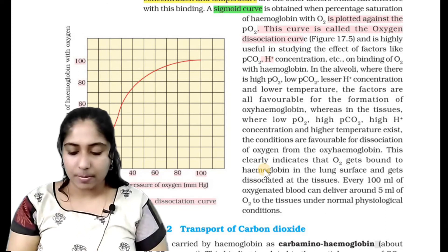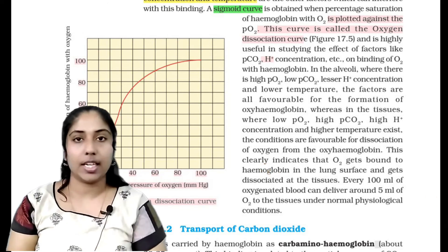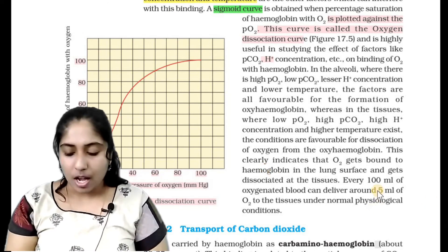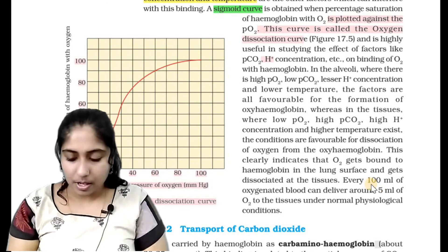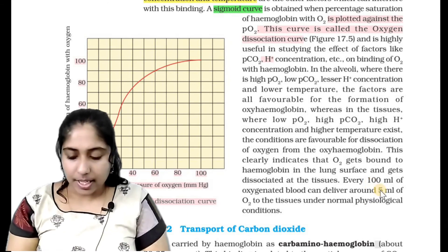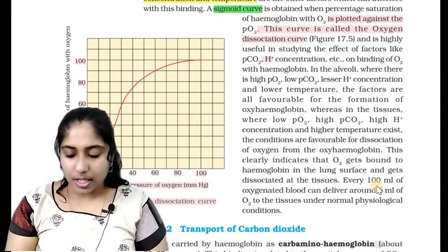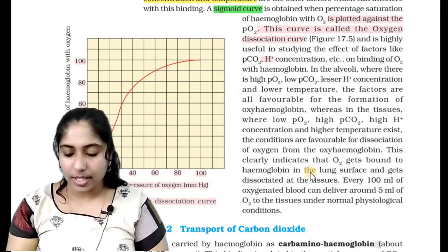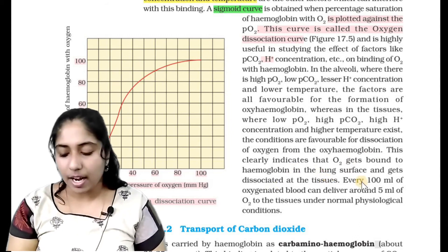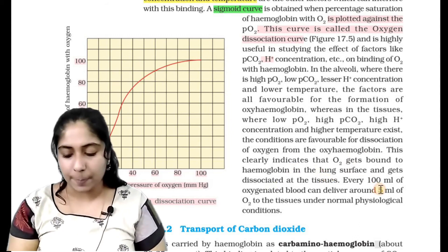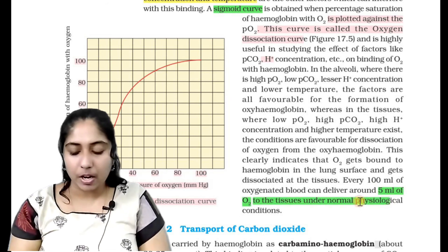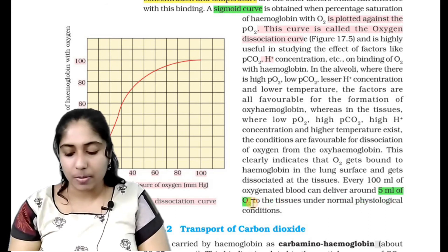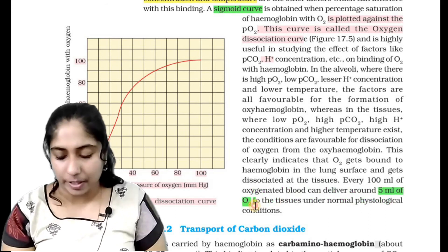This clearly indicates that oxygen gets bound to hemoglobin in the lung surface and gets dissociated in the tissues. Every 100 ml of oxygenated blood can deliver around 5 ml of oxygen to the tissues under normal physiological conditions.